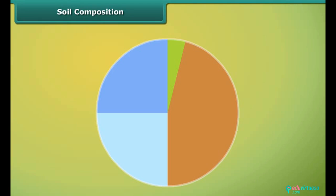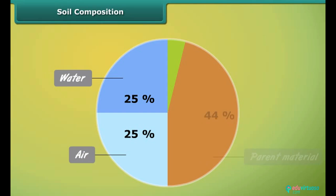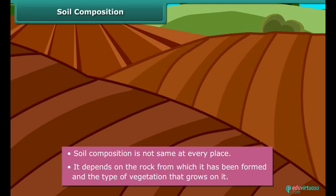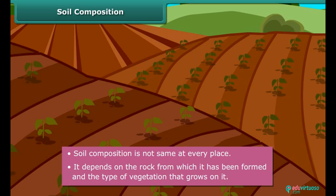Soil composition: Soil is a mixture of water, air, parent material and organic matter. Over time these four components combine together to form healthy fertile soil. Don't think that soil composition is same at every place. It depends on the rock from which it has been formed and the type of vegetation that grows on it.